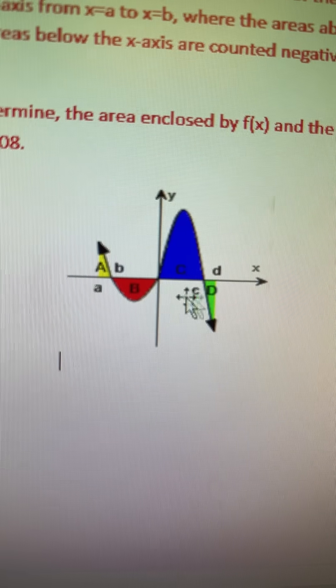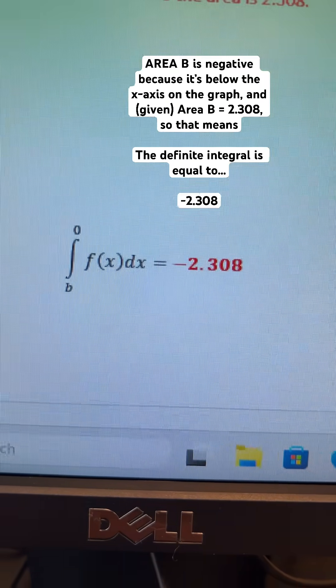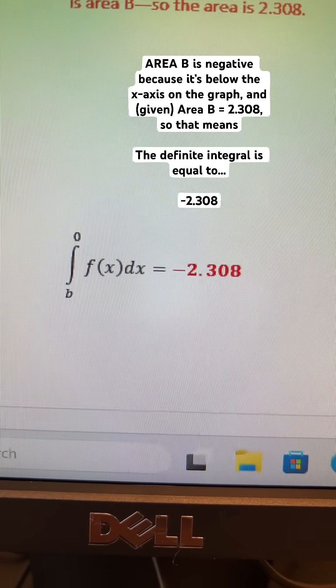But wait, as you can see, integral B is actually below the x-axis. This means the integral is negative 2.308.